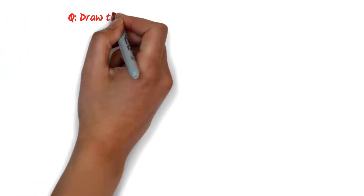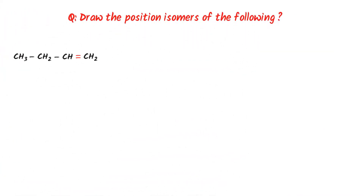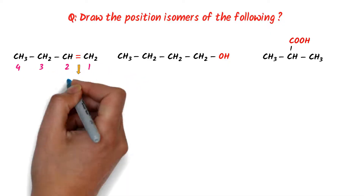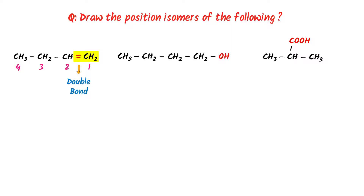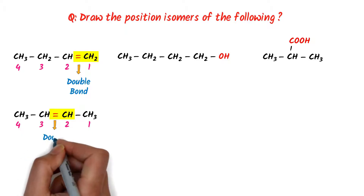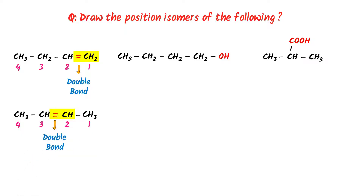Now let me teach you one exam question: draw the position isomers of the following compounds. In this compound, we can see that the double bond is present at the first carbon. If I change the position of this double bond, I will get another isomer of this compound. So I am changing the position of this double bond from the first position to the second position. Here the double bond is present at the second position, so this is the position isomer of this compound.